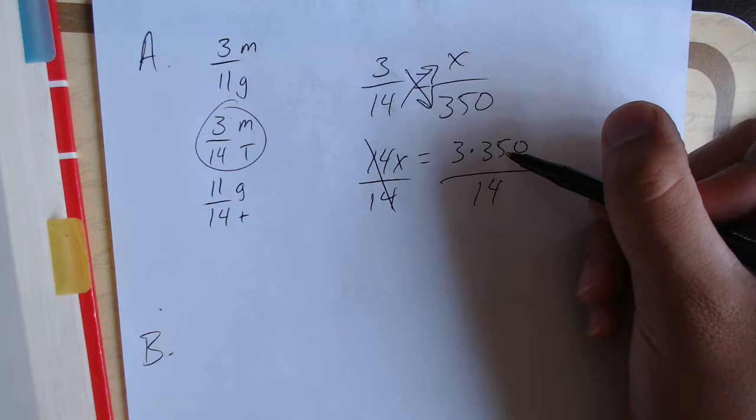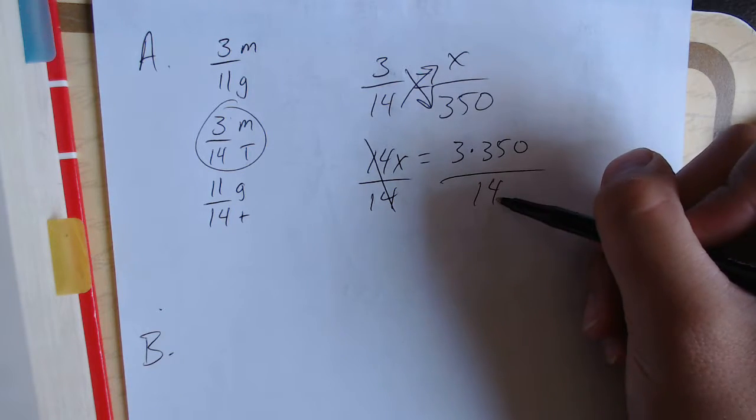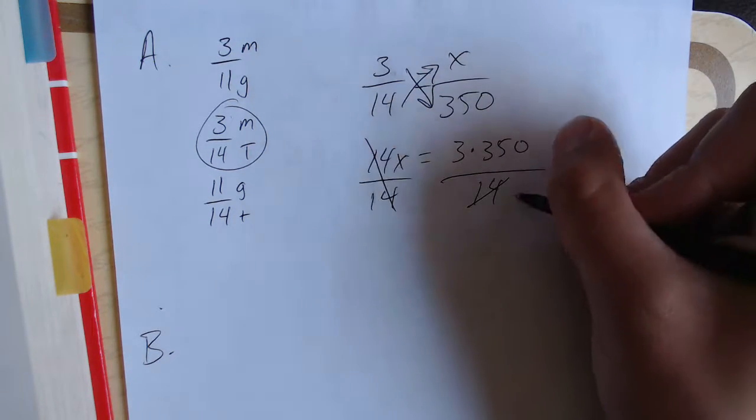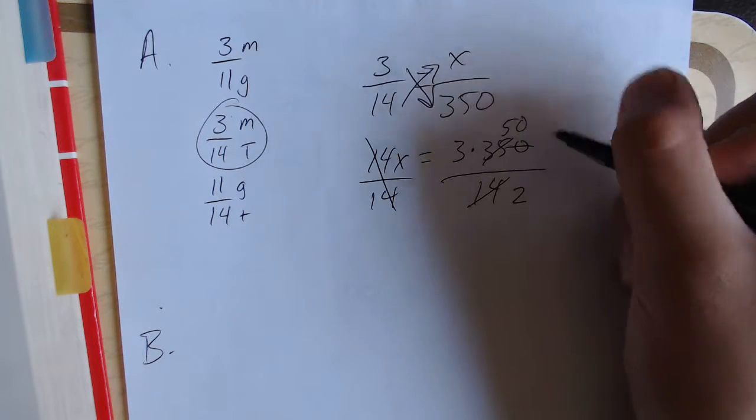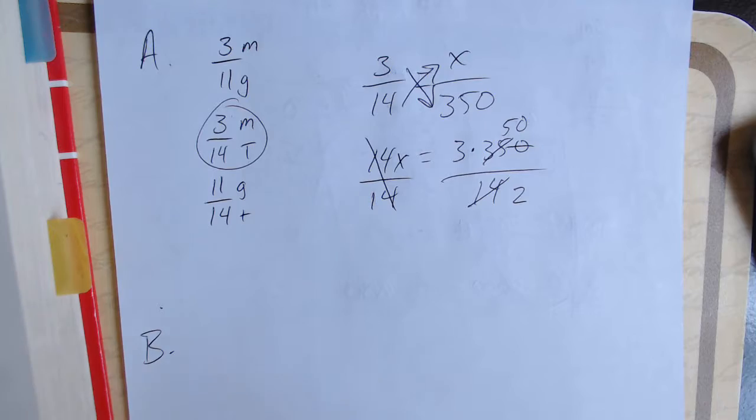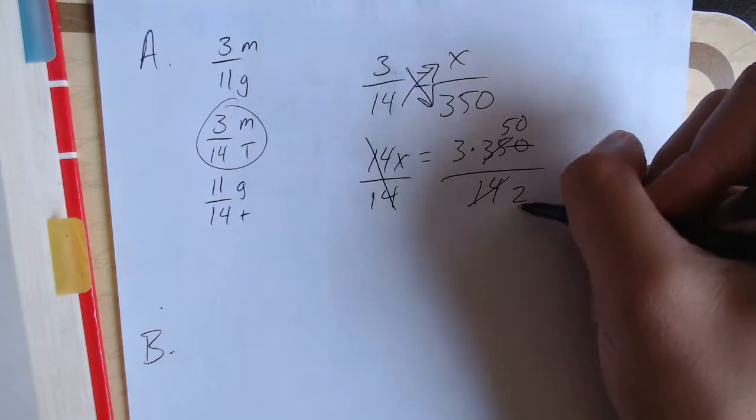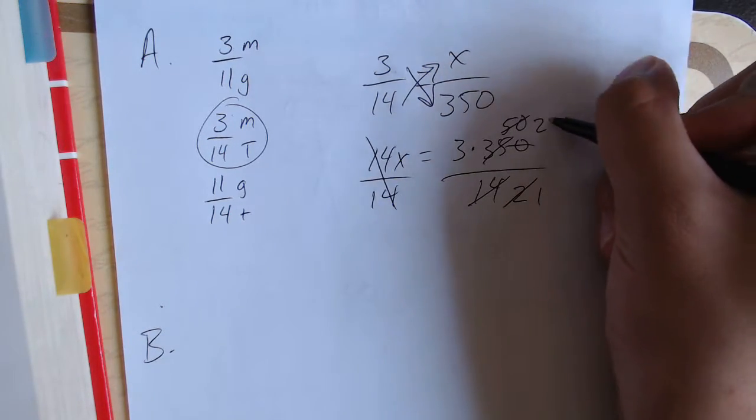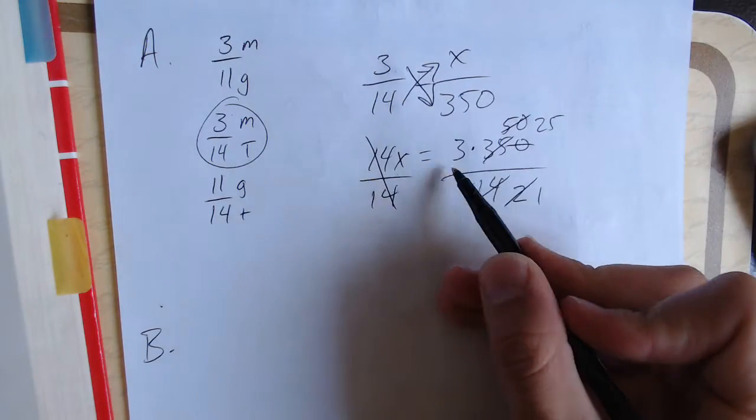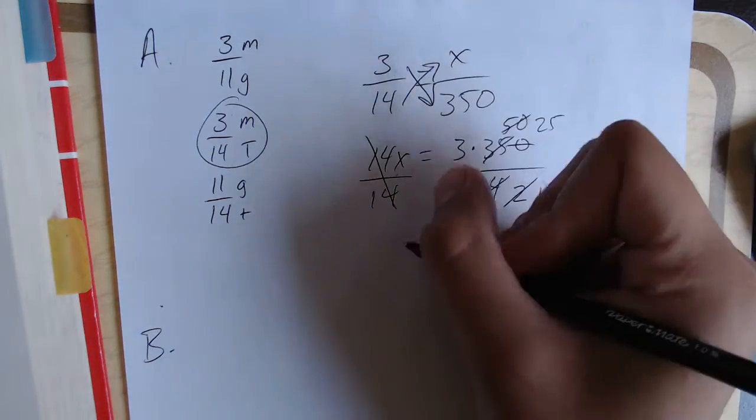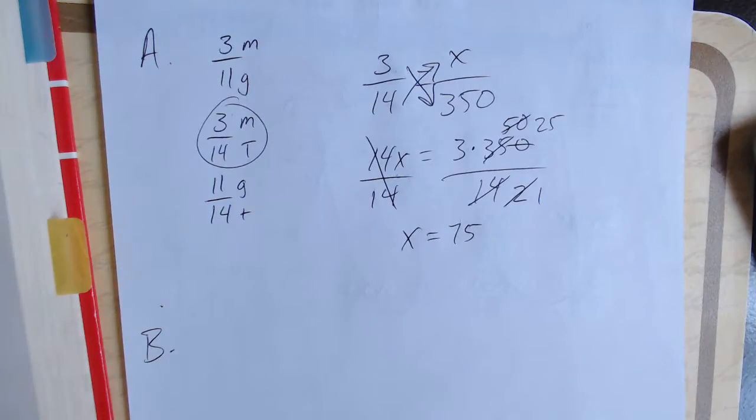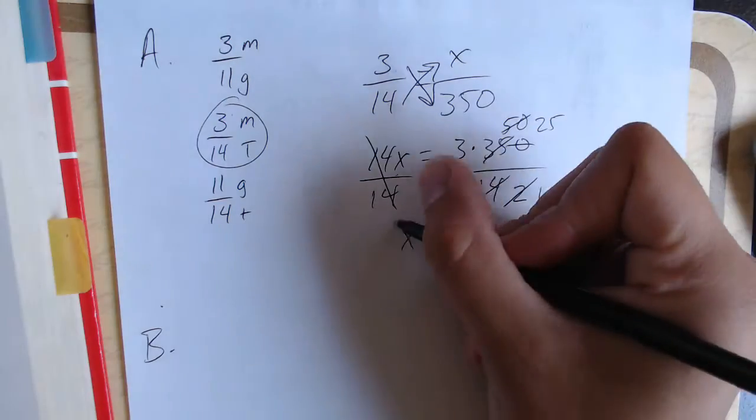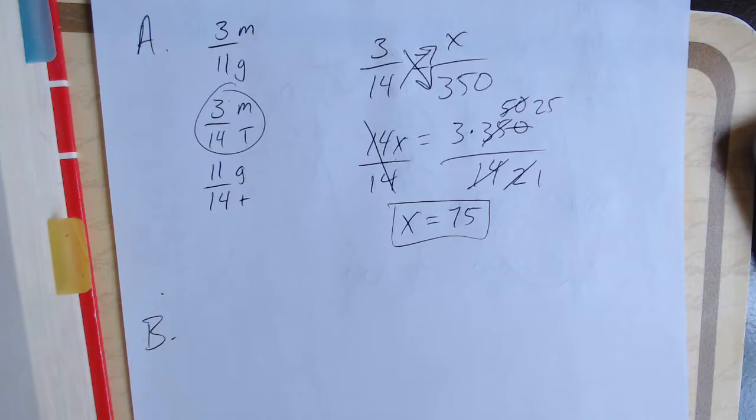We can see here that 7 goes into 35 and 14 evenly. 7 will go into 14 2 times. 7 goes into 35 5 times, and we bring that 0 up to get 50. 2 can go into 50 evenly, and that becomes 25. So then we just get x equals 3 times 25, or 75. So that's our answer for A. Not too hard.